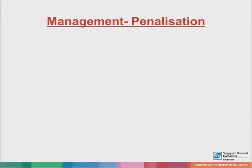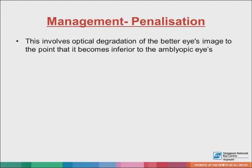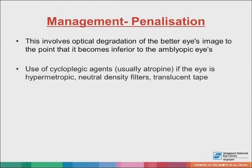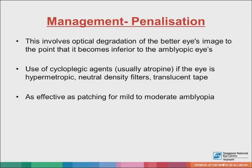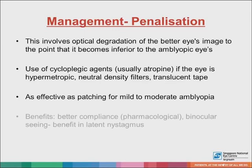The other way that ocular dominance can be corrected is penalization. This involves optical degradation of the better eye's image to the point that it becomes inferior to the amblyopic eye's image. If the child is hyperopic, the use of cycloplegic agents such as atropine can be used to cause an image blur in the better eye by reducing accommodation. Other methods, such as using neutral density filters or translucent tape, can also be employed. Penalization has been shown to be as effective as patching for mild to moderate amblyopia, and compliance will also be better.